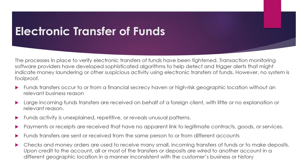Illicit fund transfers can be easily hidden among the millions of legitimate transfers that occur each day. For example, a money launderer might initiate unauthorized domestic or international electronic transfers such as ACH debits or cash advances on stolen credit cards, placing the funds into an account established to receive the transfer. Another example is stealing a credit card and using the funds to purchase merchandise that can be resold to provide the criminal with cash.